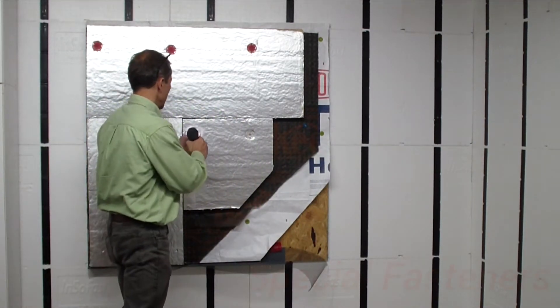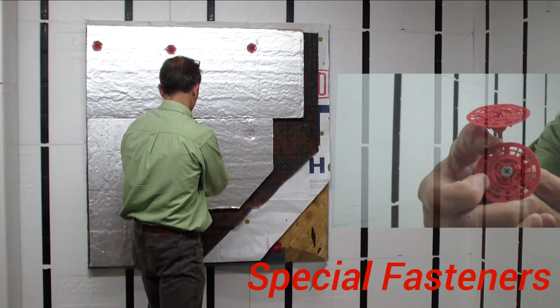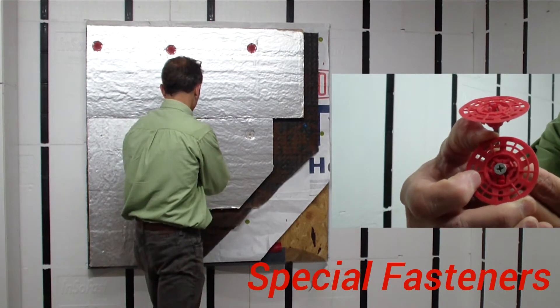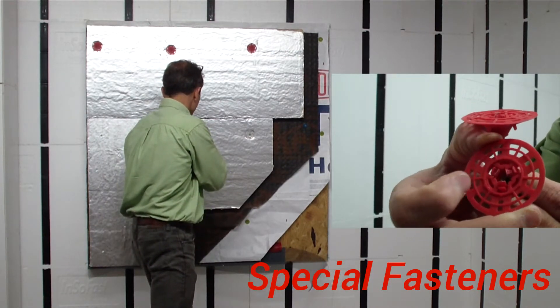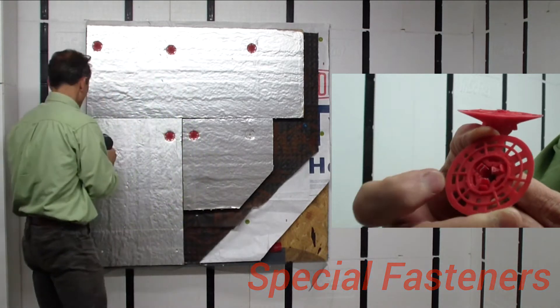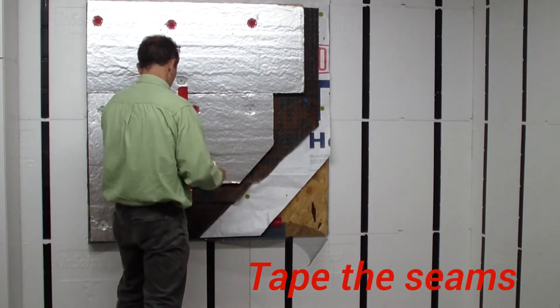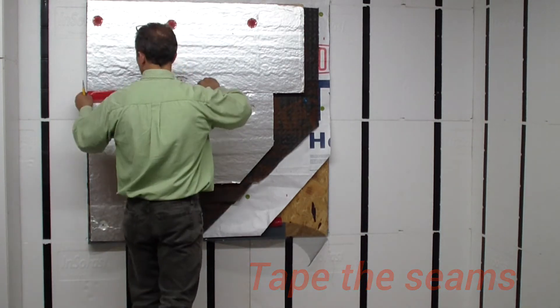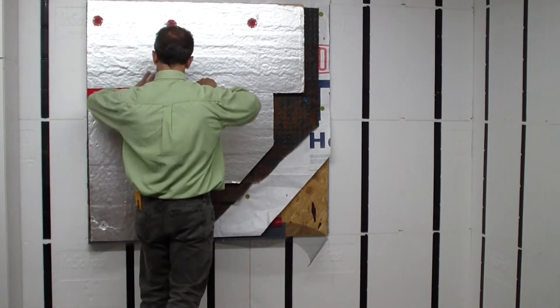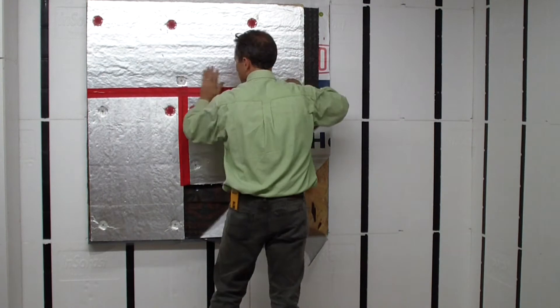Pin the insulation to the wall with a specially designed fastener with a recessed thermal chamber to help reduce cold spotting or thermal bridging through these through-wall penetrations. Now that the insulation is pinned to the wall, apply air sealing tape to all of the insulation seams and butt joints to help reduce air and water infiltration.